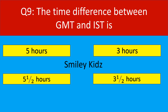Question number 9. The time difference between GMT and IST is... Your options are 5 hours, 3 hours, 5 and a half hours, 3 and a half hours.